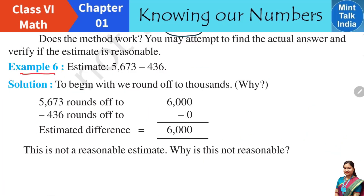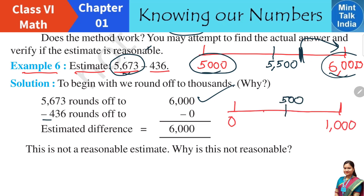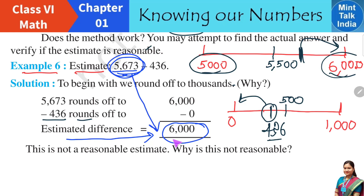The next example: estimate the difference of 5,673 and 436. We round off each number separately. Rounding 5,673 to the nearest thousand gives 6,000. For 436: the midpoint between 0 and 1,000 is 500, and 436 is smaller than 500, so it rounds to 0. Then 6,000 minus 0 is 6,000. But since we are subtracting something, the answer should be smaller — so 6,000 is actually larger than expected. This is not a reasonable estimation.